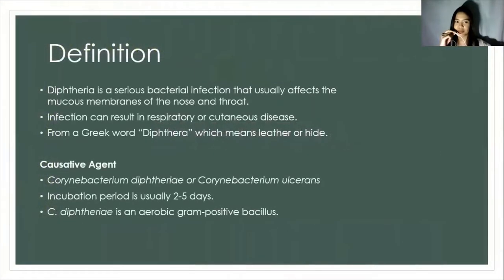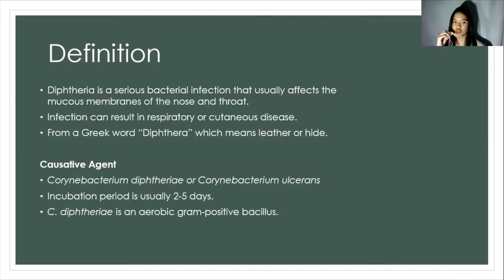So in definition, diphtheria is a serious bacterial infection that usually affects the mucous membranes of the nose and throat. The infection can result in respiratory or cutaneous disease. It is from a Greek word 'diphtheria' which means leather or hide. The causative agent is Corynebacterium diphtheriae or Corynebacterium ulcerans, with an incubation period of usually two to five days. It is an aerobic gram-positive bacillus, and it makes a toxin that causes people to get very sick.